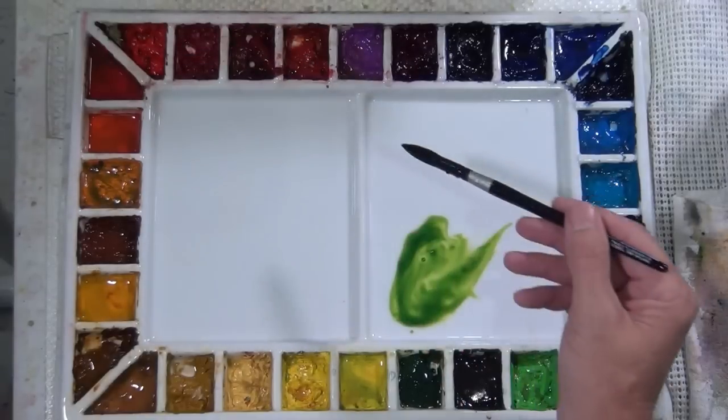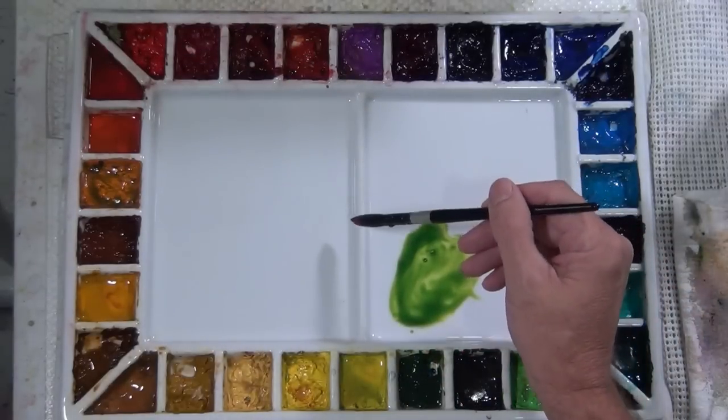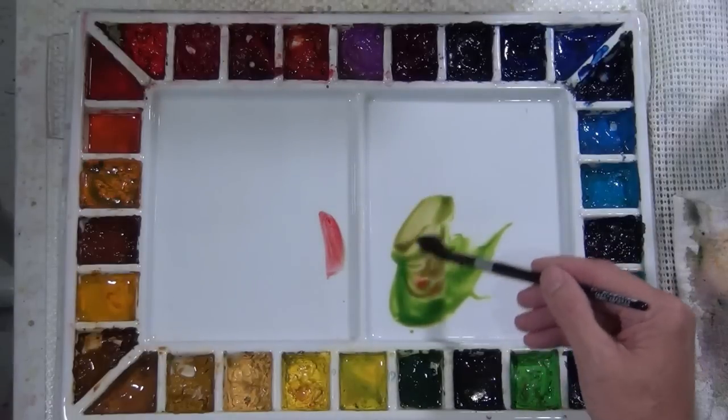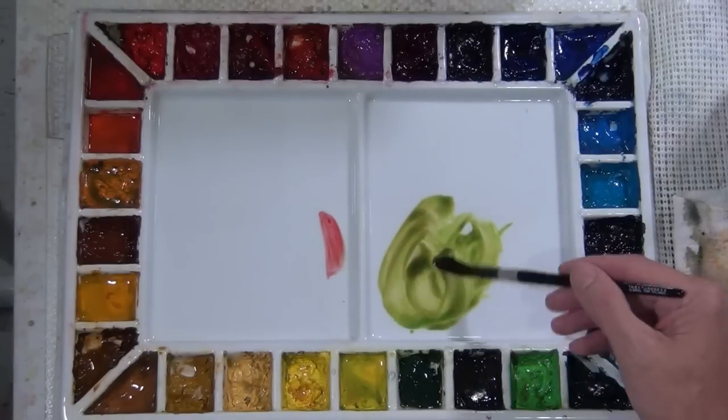Sap green directly out of the tube is a bit raw. Taking a touch of pyro red and mixing it in takes that rawness off. The more you add, it drives it more and more towards neutral.